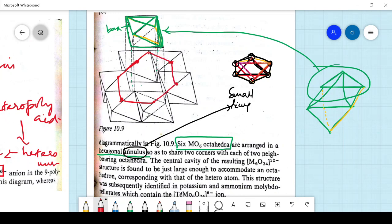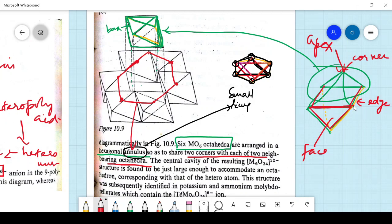And this hexagonal pattern is what's called as the annulus. And there you share two corners of each of the two neighboring octahedra. Now, corners, these are the corners. This is a corner. And this is the edge. And this entire thing, one side, you call it as the face. Edge, corner, face. And sometimes this is also called as the apex. So there is an apex. And this one is forming a base. So these bases are what we see here.